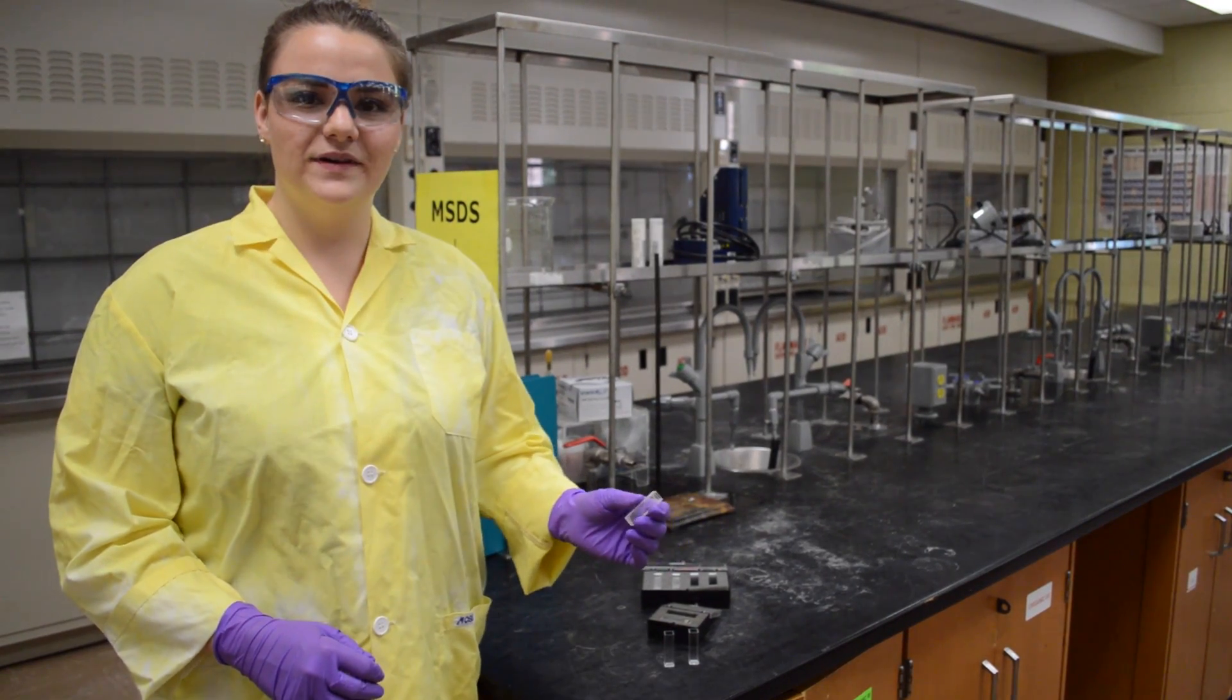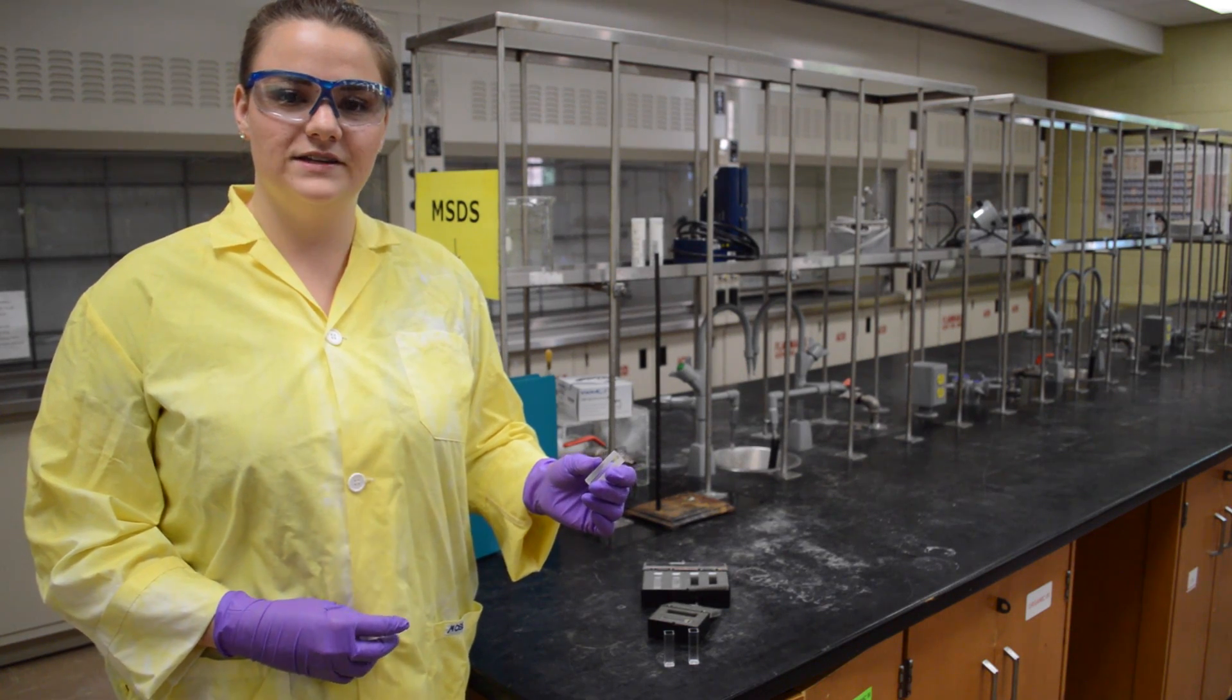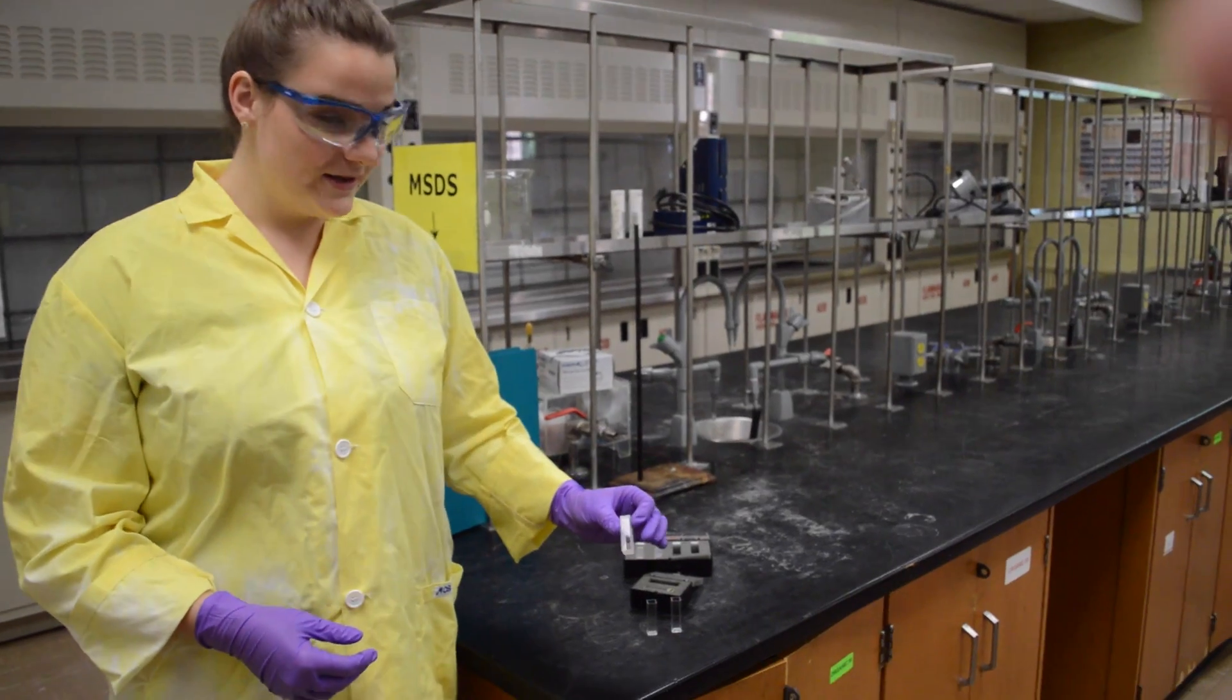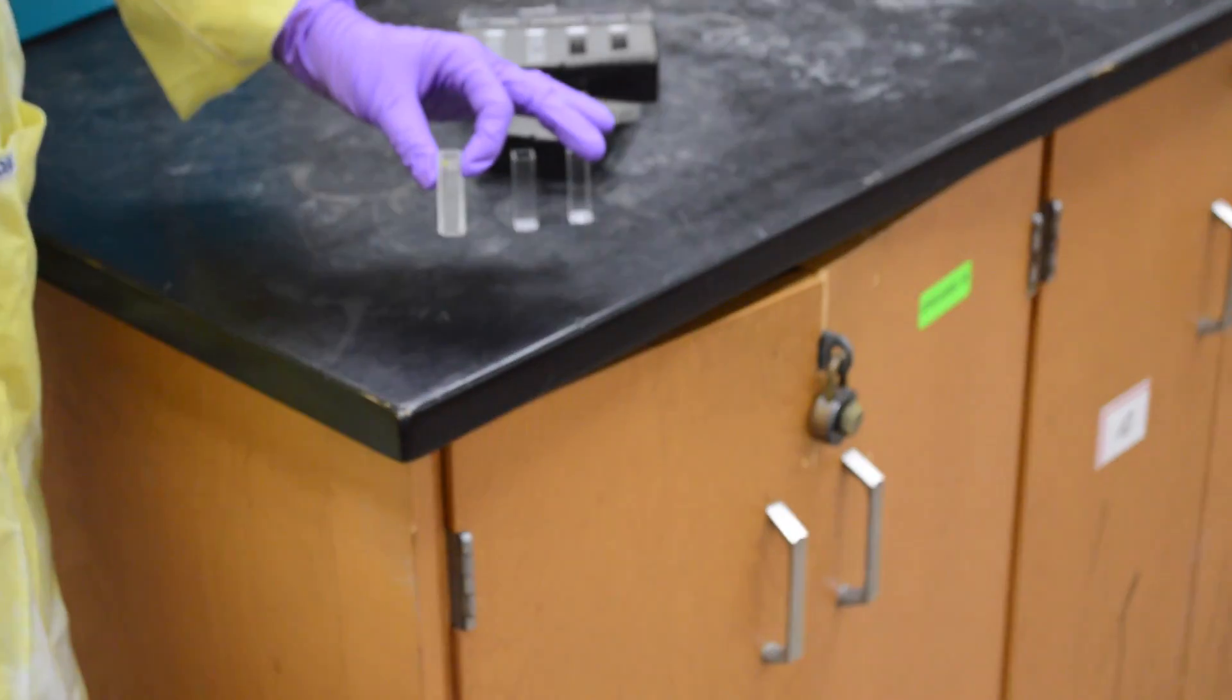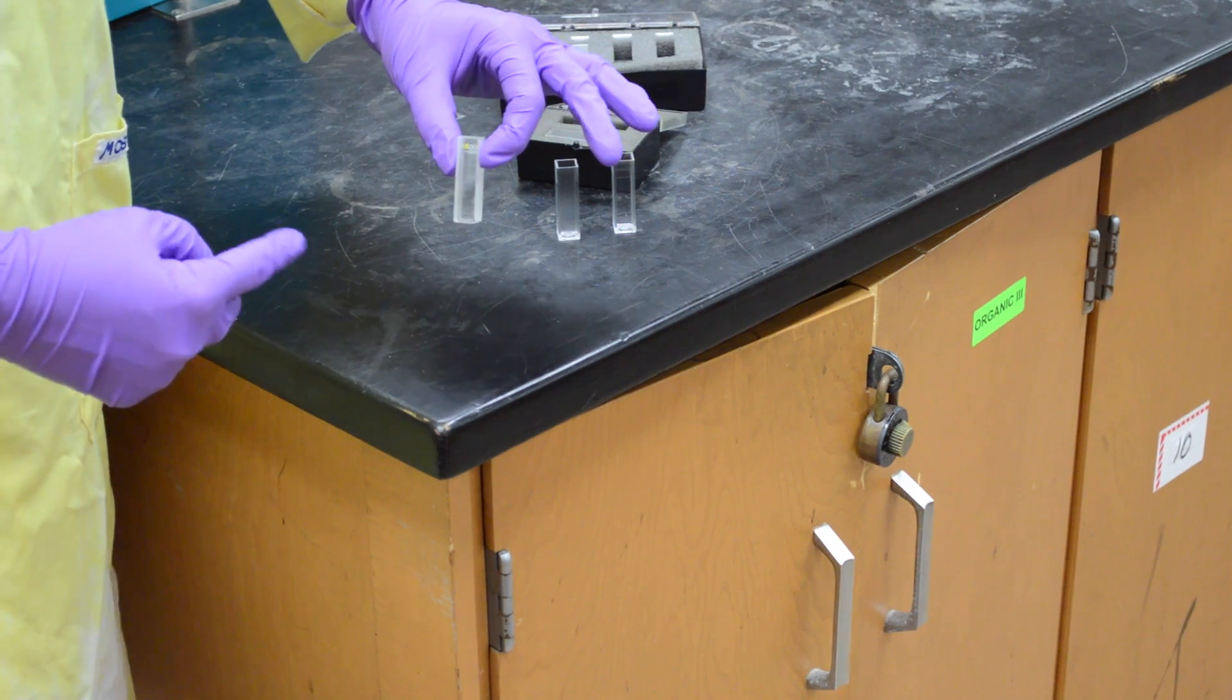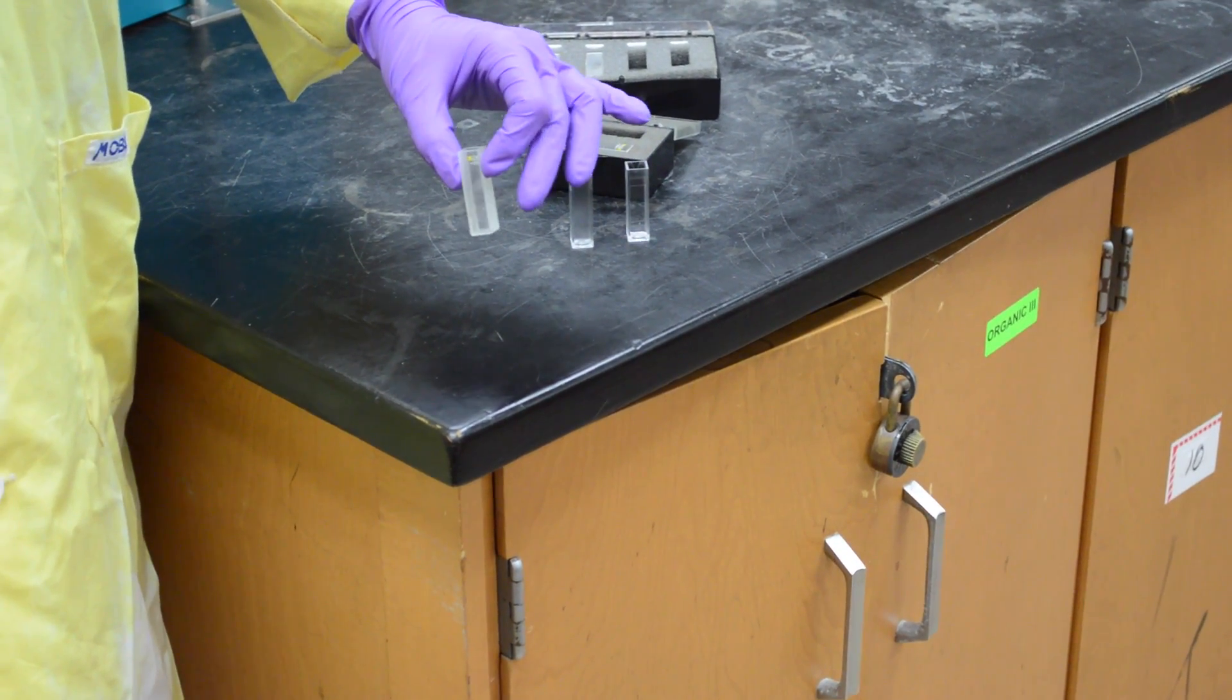The second type of cuvette is a glass cuvette and this is used for all solvents and it is useful in the visible range. As you can also see here, there is a clear side and an opaque side, so you would only want to touch the opaque side once again as the light passes through the clear window to collect the data.